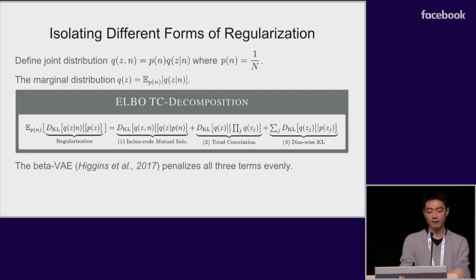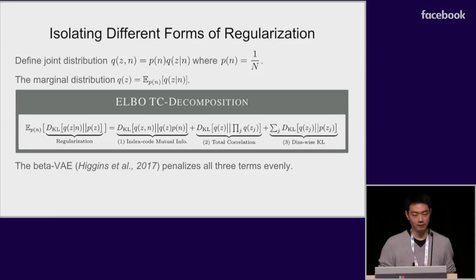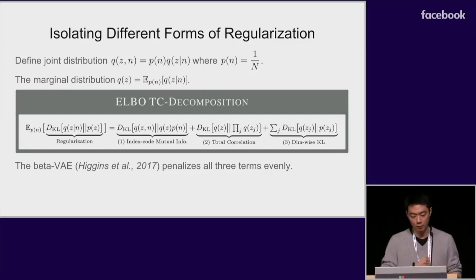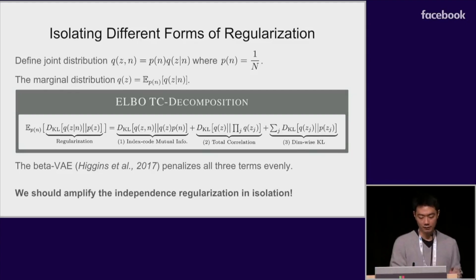Now the beta VAE assigns a large penalty to the entire KL regularization term, evenly penalizing all three terms in this decomposition. However, minimizing mutual information seems counterintuitive for learning a representation and this has been heavily discussed in existing works. We can also reason about the role of the prior. We see that the prior now only appears in the third term and acts as a regularization for the one-dimensional marginal distributions. Note that while any 1D distribution can be easily warped into any other 1D distribution, this is not necessarily an easy task for the encoder since q(z) is a large mixture distribution. What's interesting is instead of designing a prior, if what we care about is learning an independent representation, then we can choose any factorized prior and amplify just the independence regularization in isolation, hopefully without affecting the other terms too much.